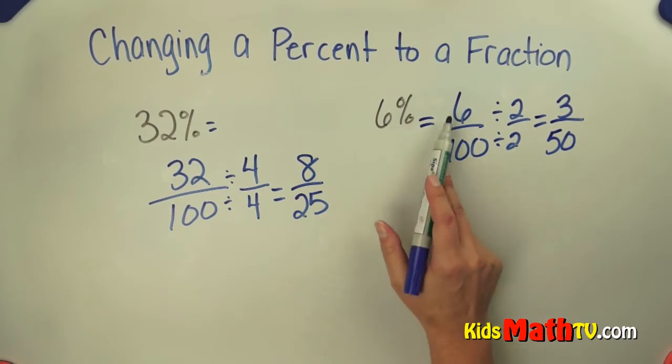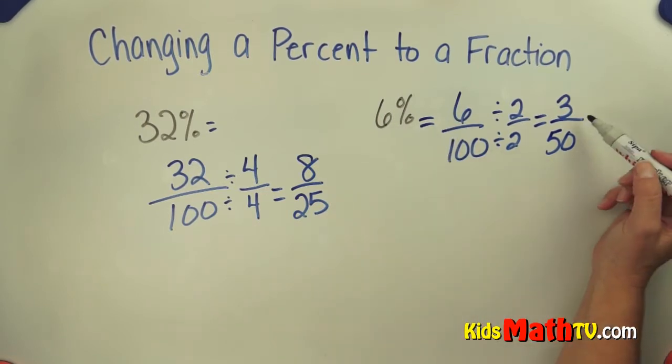So 6% is the same as 6 over 100. And it's also equivalent to 3 50ths. And that's the end of our lesson on changing a percent to a fraction.